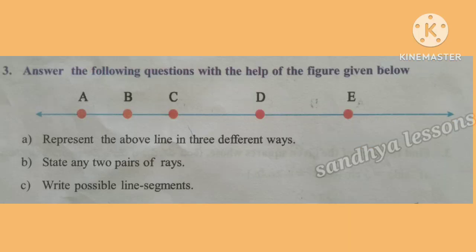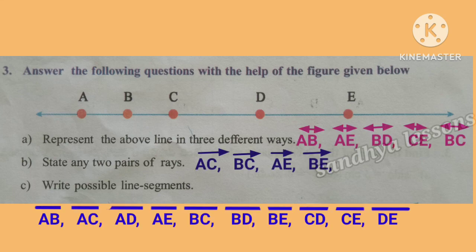Third problem: answer the following questions with the help of the figure given below. A: represent the above line in three different ways. We can represent the given line as line AB, line AE, line BD, line CE, or line BC. B: state any two pairs of rays. Ray AC, ray BC, ray AE, ray BE.